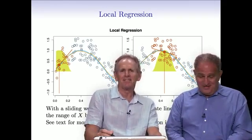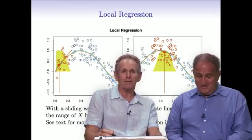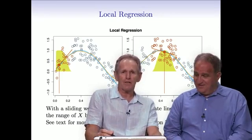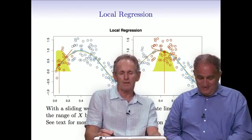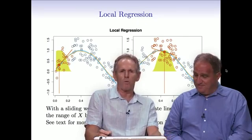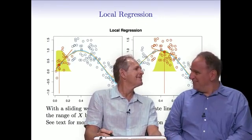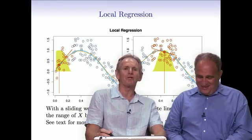Rob's PhD thesis was called local likelihood and was an extension of these local regression ideas to a whole range of problems and still used widely today. I wouldn't say widely. You're too modest, Rob.